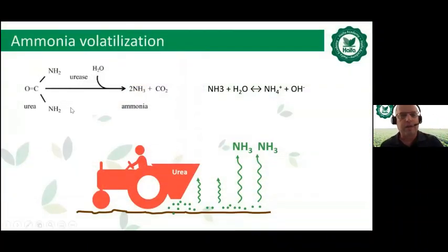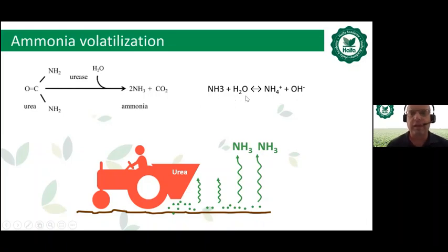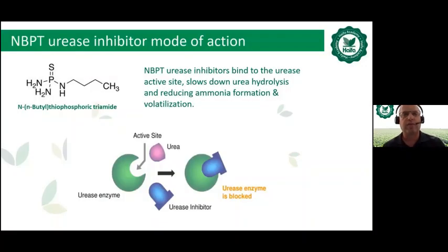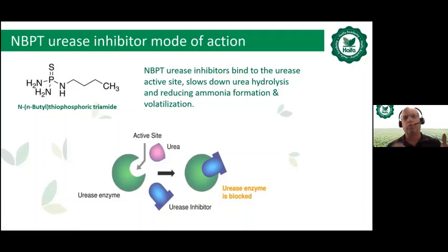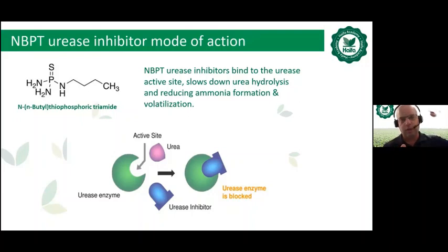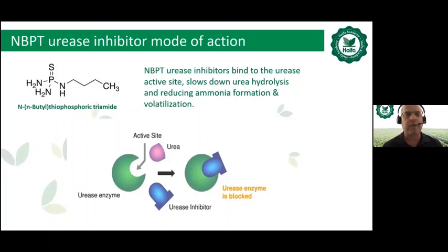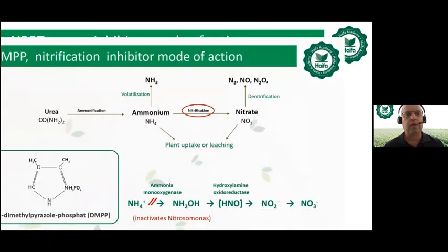Now let's talk about nitrogen inhibitors. We discussed the process of urea transforming into ammonium and ammonia. The solution in terms of inhibitor is NBPT — a urease inhibitor. It blocks the active site of the urease enzyme, preventing urea from transforming into ammonium and ammonia. The main idea is to keep urea as urea until irrigation or rain solubilizes it into the soil, where it can hopefully transform into ammonium, attach to soil particles, and be available for the plant.